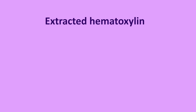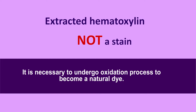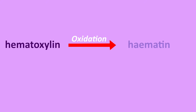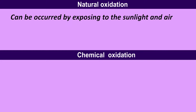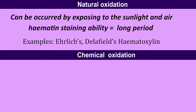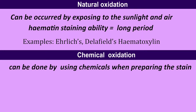However, extracted hematoxylin is not a stain itself, and it is necessary to undergo an oxidation process to become a natural dye. The oxidation results in a product called hematein, and it can be achieved by two ways: natural oxidation and chemical oxidation. Natural oxidation can occur by exposing to sunlight and air, and this hematein retains its staining ability for a longer period.